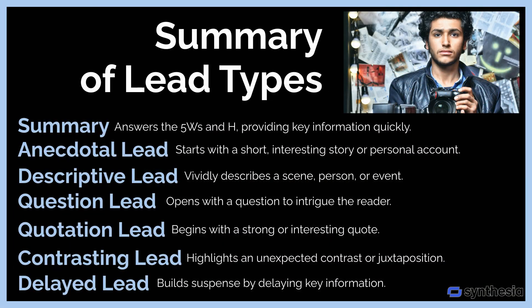Summary of lead types: Summary lead answers the five W's and H, providing key information quickly. Anecdotal lead starts with a short, interesting story or personal account. Descriptive lead vividly describes a scene, person, or event. Question lead opens with a question to intrigue the reader. Quotation lead begins with a strong or interesting quote. Contrasting lead highlights an unexpected contrast or juxtaposition. Delayed lead builds suspense by delaying key information. Each type of lead serves a different purpose, depending on the tone, subject, and style of the article, making it essential for journalists to choose the one that best suits their story.